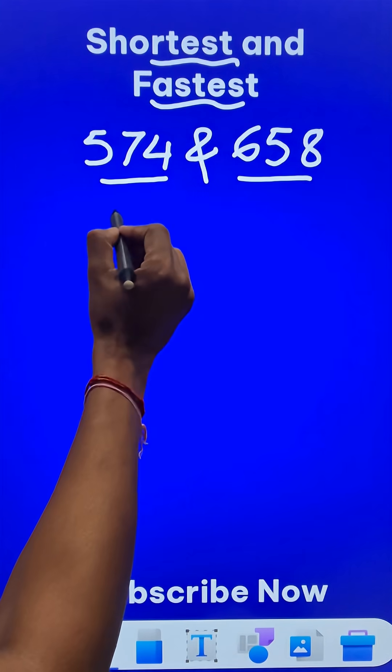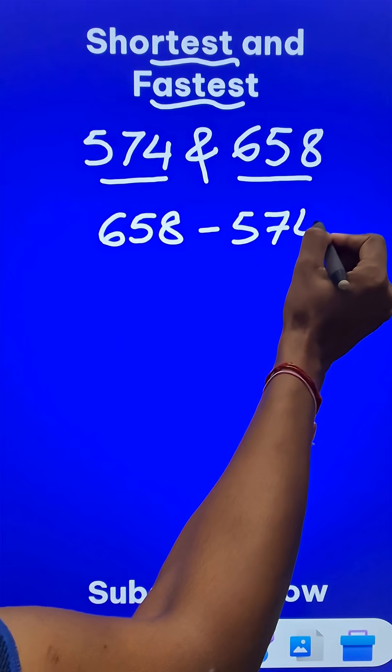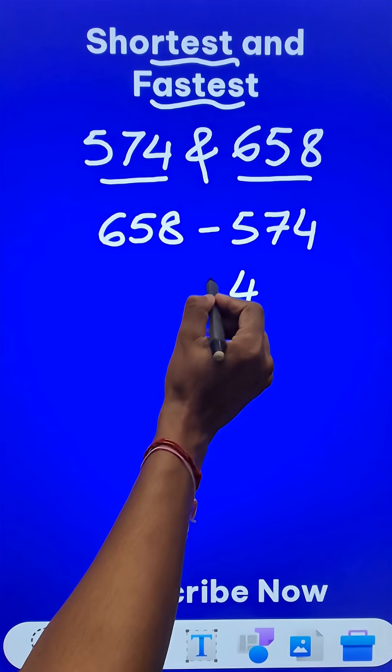So I need to find what is the difference between them. 658 minus 574. So this gives me a 4 here and 65 minus 57 is 8.